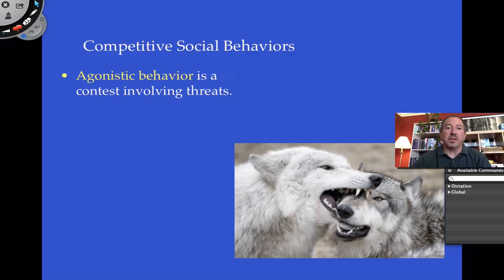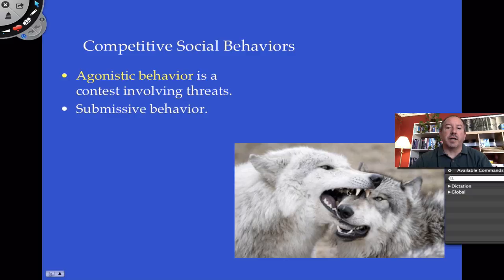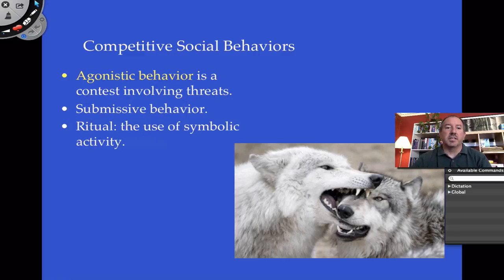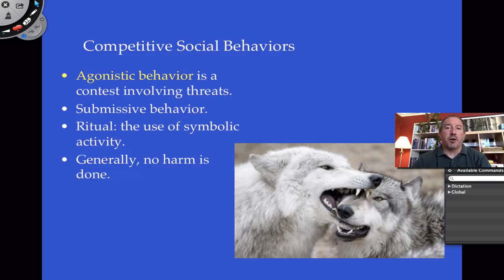Agonistic behavior looks on the surface like a fight, but it's really threats and pretending to bite. If you've seen dogs or wolves do this — one wolf looks like it's going to bite another, but it isn't really doing it. It's exerting itself in terms of physical prowess, intimidating and hoping to back down its opponent. The opponent then becomes submissive. It's kind of ritualistic — pretending to bite, howling, gesturing. Generally, no harm is done. It's kind of like wrestling.